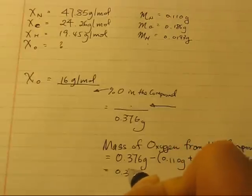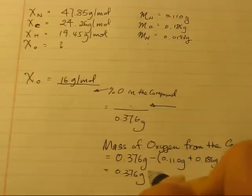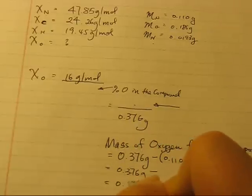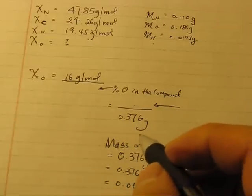So, that is equal to, let me use my calculator, 0.376 minus the total of those three masses. So, that is equal to 0.11 plus 0.186 plus 0.0193. So, you should get this number, 0.0607.